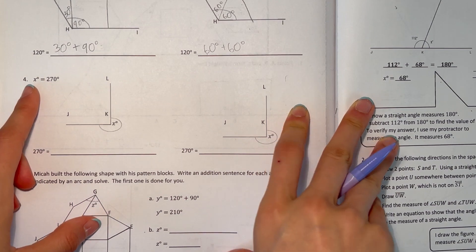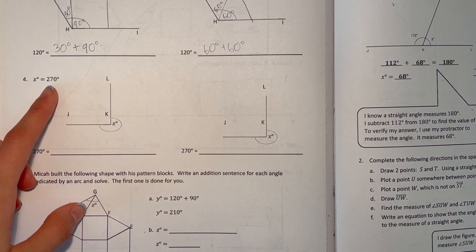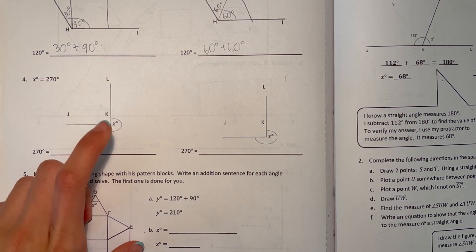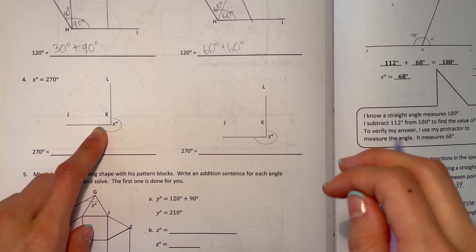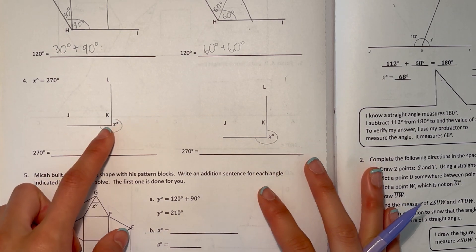Number four. X equals 270 degrees. So this much is 270 degrees. And this is the exterior angle. This is outside. So we want to find what makes X.